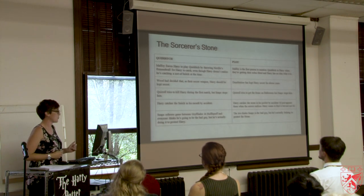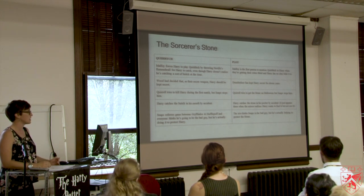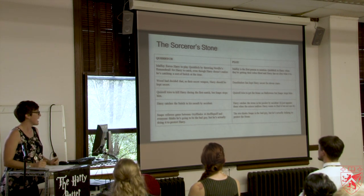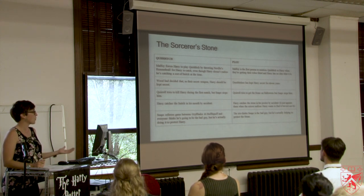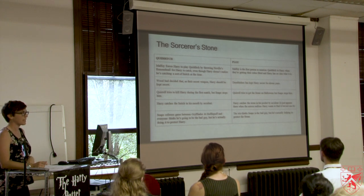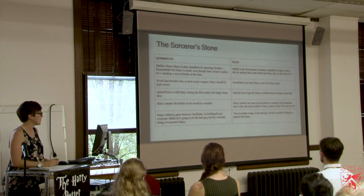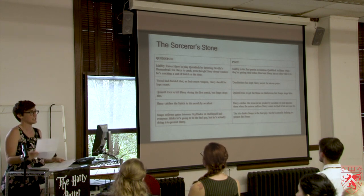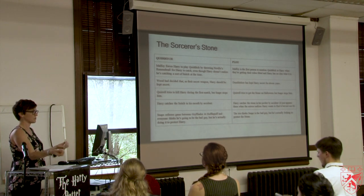In Quidditch, Malfoy forces Harry to play by throwing Neville's Remembrall for Harry to catch, even though Harry doesn't realize he's catching a sort of snitch. In the plot, Malfoy is the first person to mention Quidditch to Harry. Wood keeps Harry's secret from the rest of the team; in the plot, Dumbledore has kept Harry's secret for 11 years. Quirrell tries to kill Harry during the first match but Snape stops him — mirroring when Quirrell tries to get the Stone on Halloween but Snape stops him. Harry catches the snitch in his mouth by accident; in the plot, Harry catches the Stone in his pocket by accident. Snape referees Gryffindor-Hufflepuff and everyone thinks he's the bad guy, but he's protecting Harry — the same as the trio thinking Snape is after the Stone when he's actually trying to protect it.